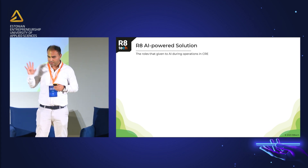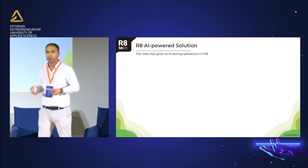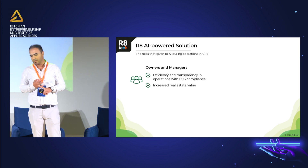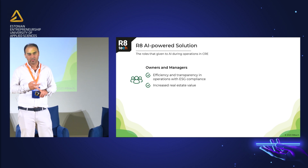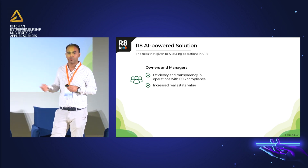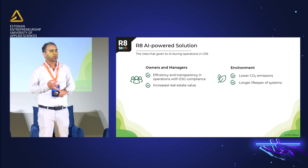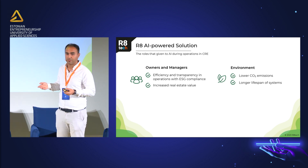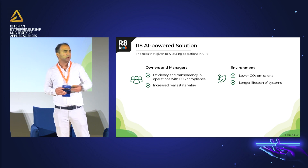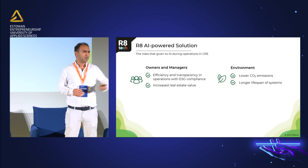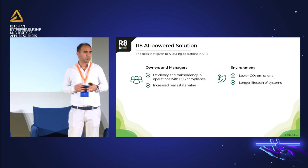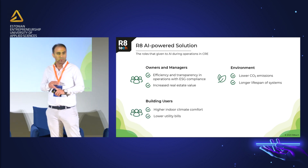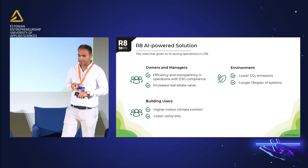Where are we using AI and in what segments? First, transparency for owners and managers — they benefit from increasing real estate value and ESG goals. Reducing CO2 emissions is important, and well-optimized systems have a longer lifespan. Like cars — if you don't do proper maintenance and don't drive properly, the cycle will be much shorter. Then there's indoor climate comfort, which I'll touch on in a moment, as well as lower bills.